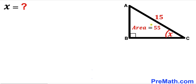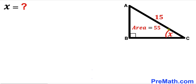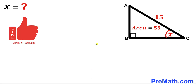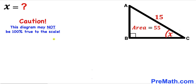Welcome to PreMath. In this video we have got a right triangle ABC as shown in the diagram, such that the area of this triangle is 55 square units and the hypotenuse AC length is 15 units. Moreover, this angle ACB is represented by X and this is our 90-degree angle. Our task is to find the value of angle X. Please don't forget to give a thumbs up and subscribe, and keep in mind that this figure may not be 100% true to scale.